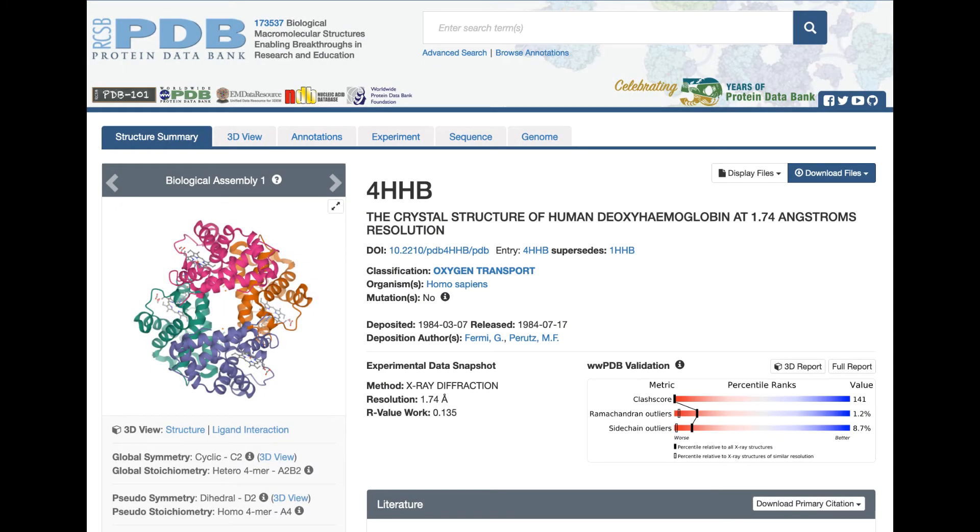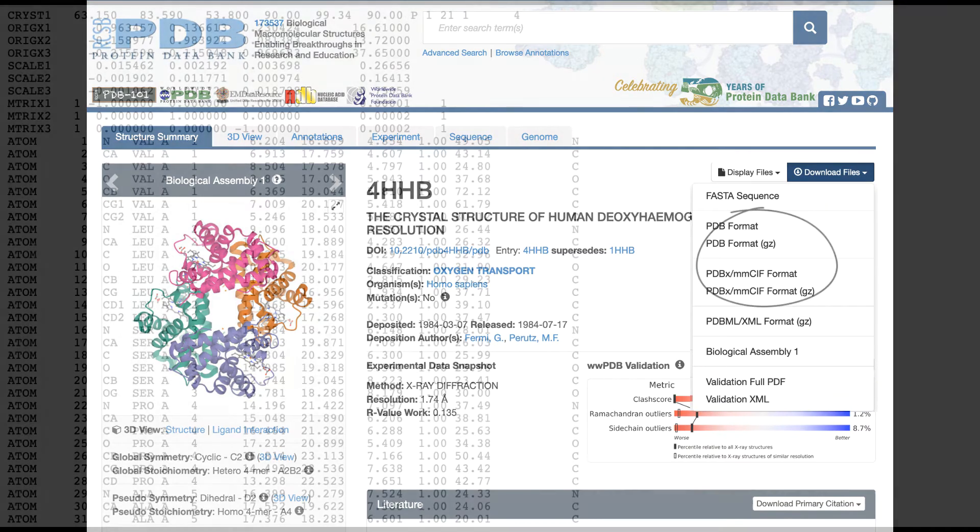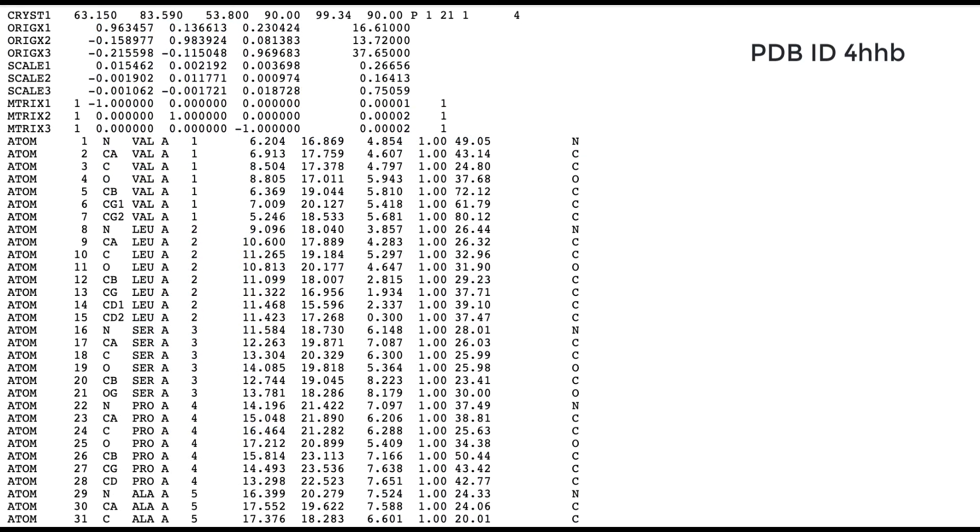Each structure in the Protein Data Bank is assigned a unique PDB identifier or PDB ID. There are several files associated with the PDB entry, but the most important one has the three-dimensional coordinates of every single atom in the structure.